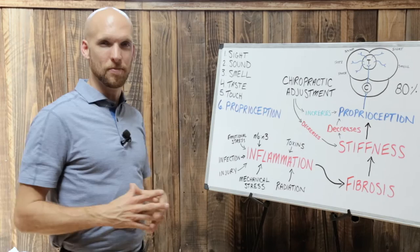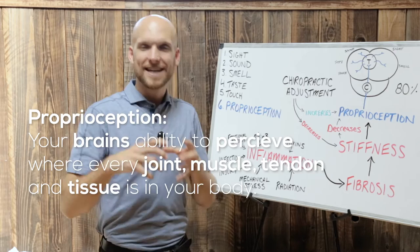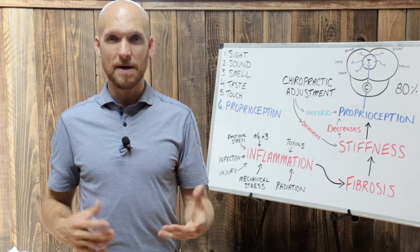Proprioception is your brain's ability to perceive where every joint, muscle, tendon, tissue is in your body, and not only access that information, but store that information so that you can access it any time that you might need it. Maybe it's stepping off of a curb, maybe it's walking down a dark hallway.